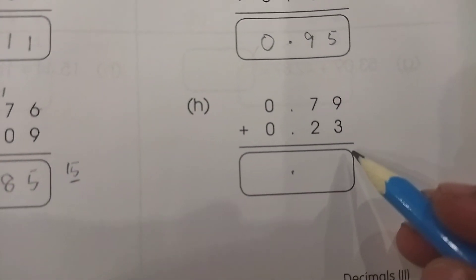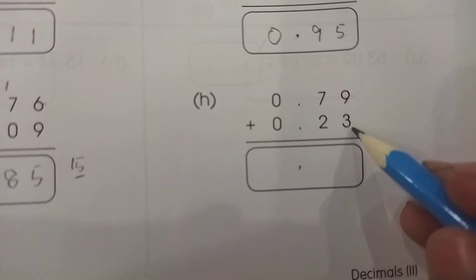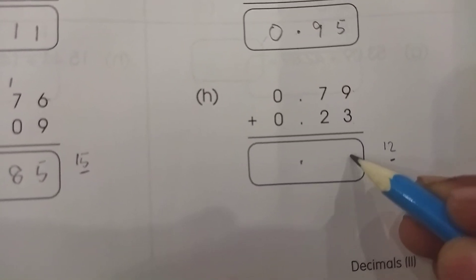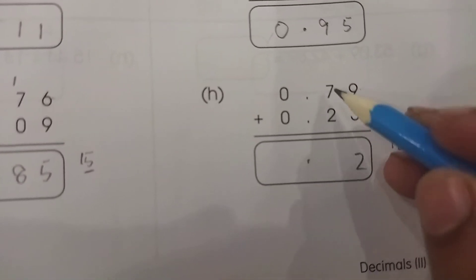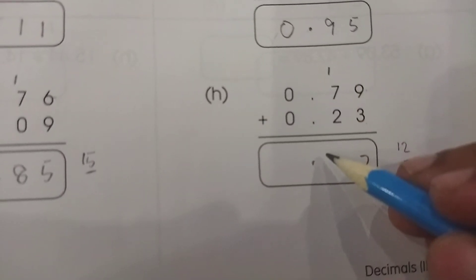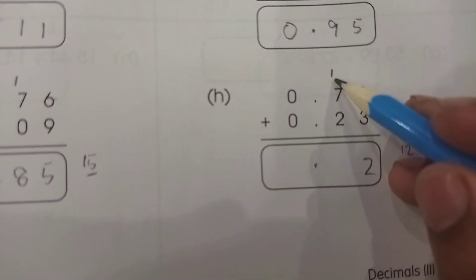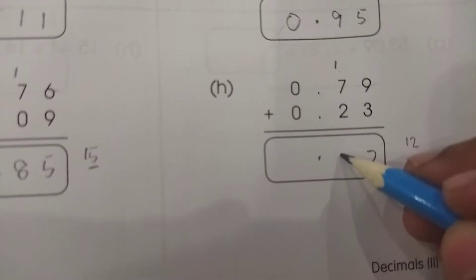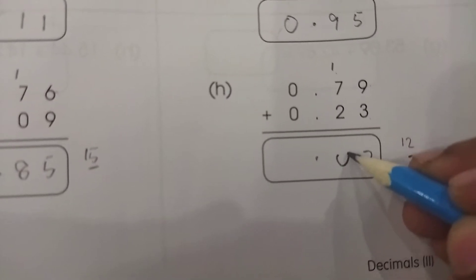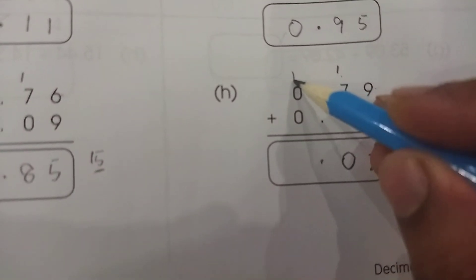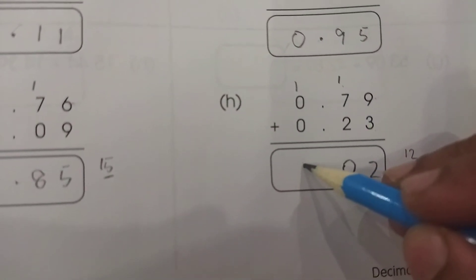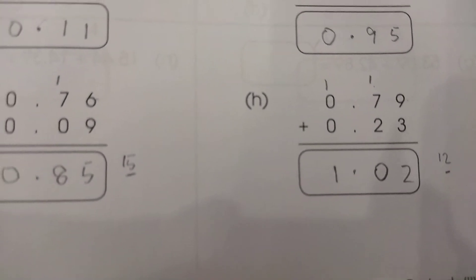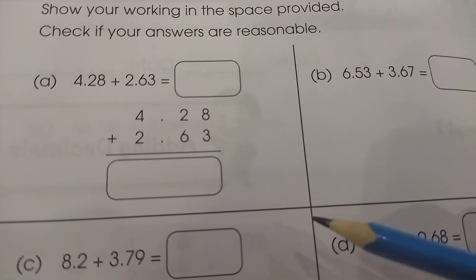Here we have nine plus three which gives twelve — we keep two down and carry one forward. Then one plus seven plus two gives ten again — we keep zero and carry one forward. The answer is 1.02.